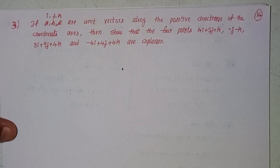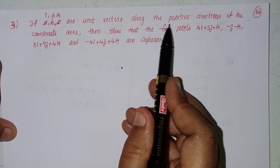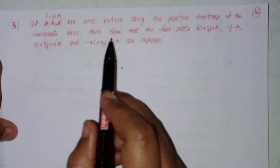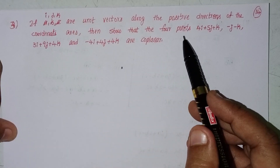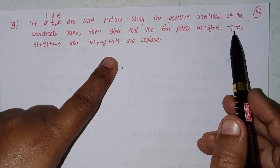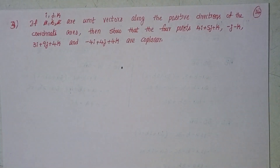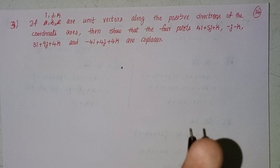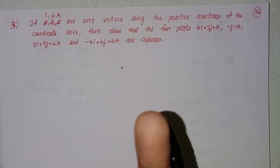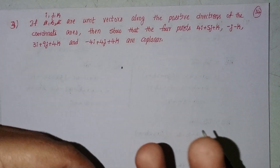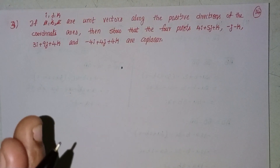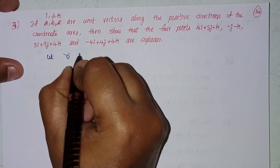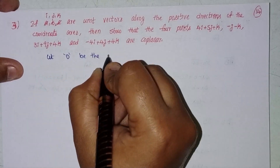The problem states: if i, j, k are unit vectors along the positive directions of the coordinate axes, show that four points are coplanar. To prove coplanarity, we need to find vectors AB, AC, and AD, then show their scalar triple product is equal to 0.